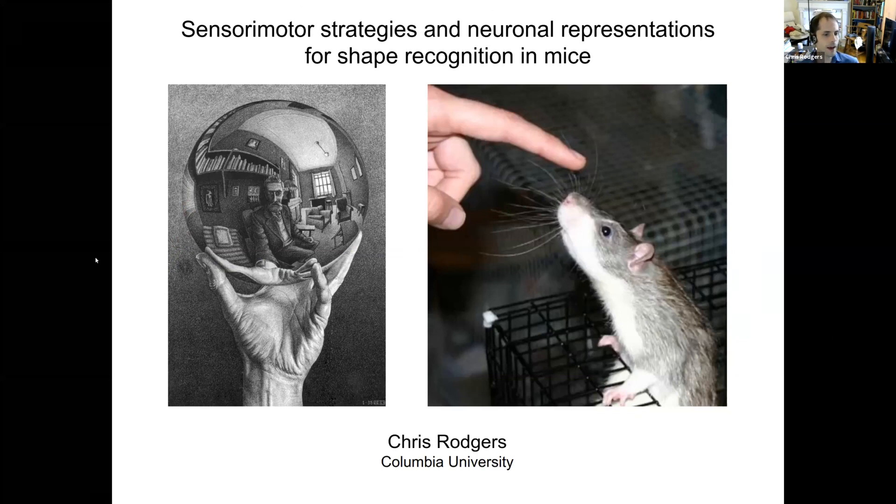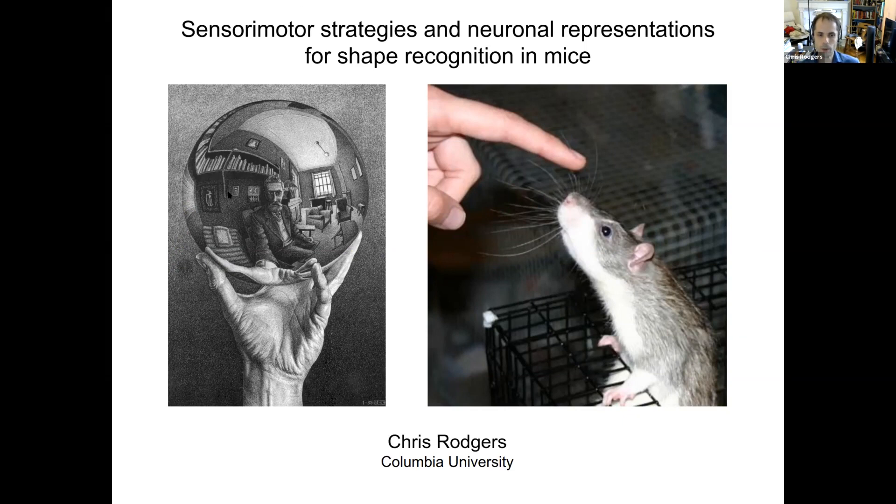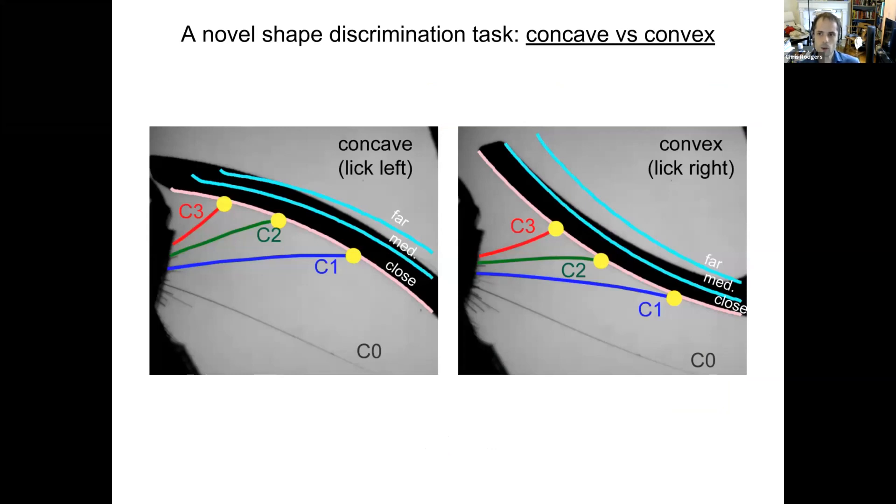So I'm interested in how we identify objects in the world around us, how we explore our world and make sense of the objects that we encounter. This is something that you and I might use our fingers to do, as in this image on the left, whereas mice and rats might use their whiskers to do a very similar thing.